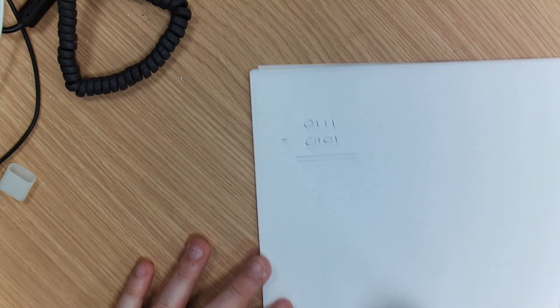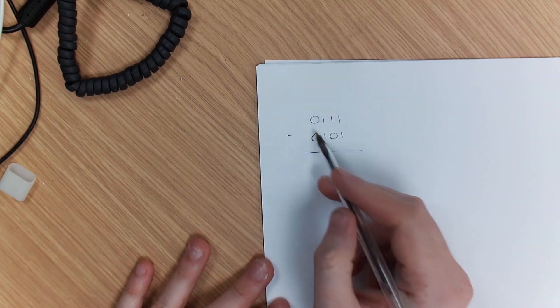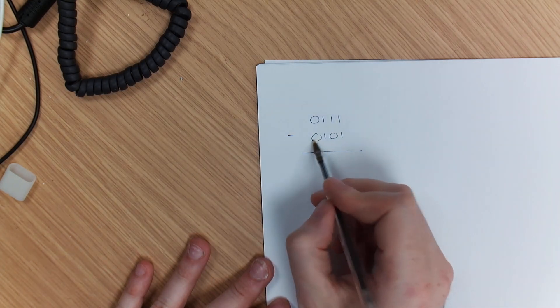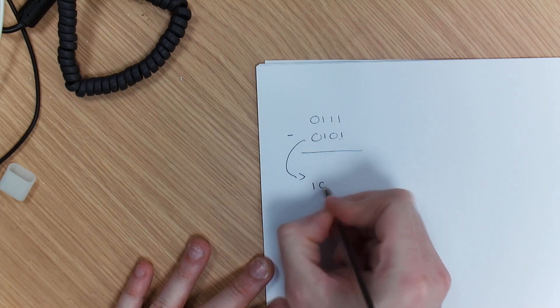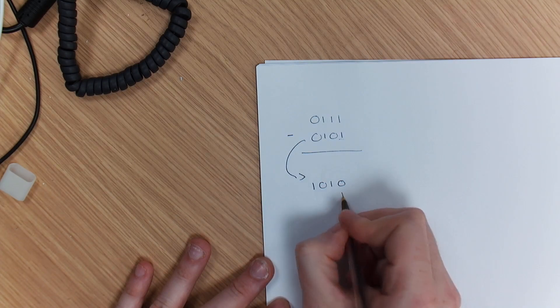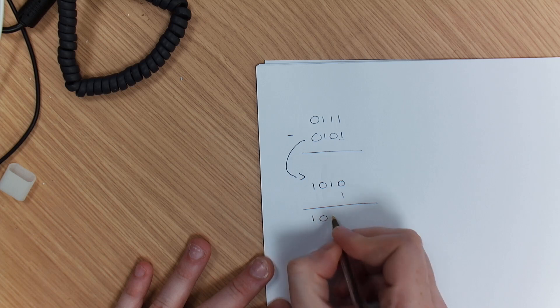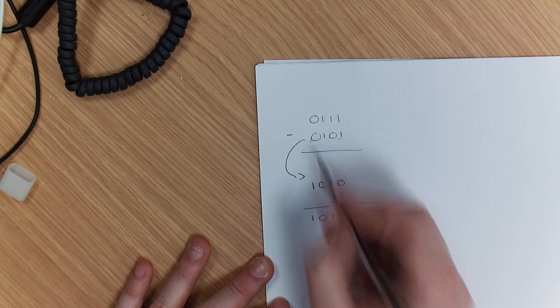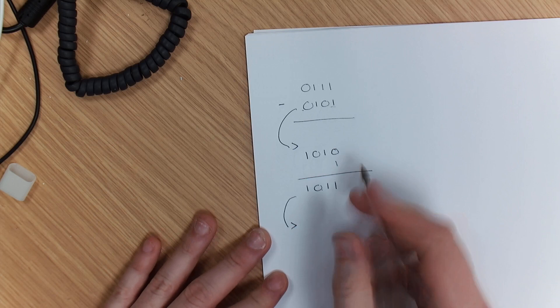Now when we're working with two's complement, the best method of subtraction that I personally find helps me is I convert this number first. So this number here becomes 1010, and then as we're working with two's complement, we add 1 to that, which gives us 1011.